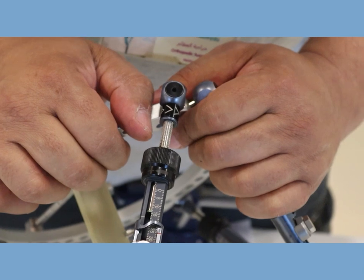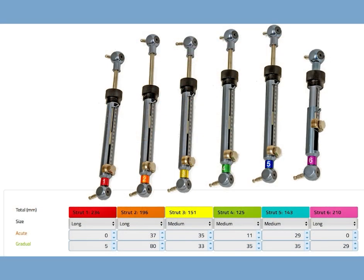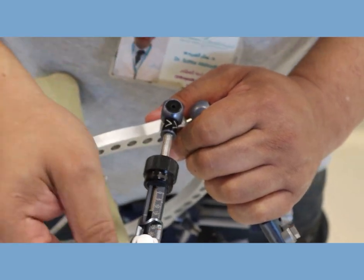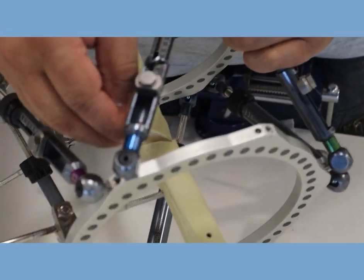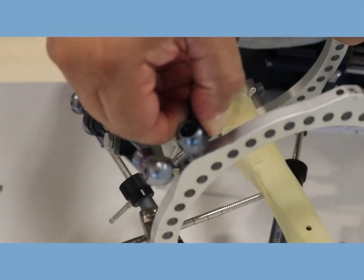I would like to emphasize the fact that the number gets smaller when the strut is lengthening is a unique feature for TL Hex frame and it can be very confusing. This is not the case with other frames such as TSF or Orthex frame. The last thing about the strut is that you have to number them. There are little markers, these are color coded from one till six, and these are usually clipped on the struts.